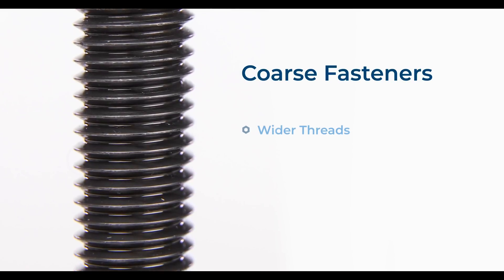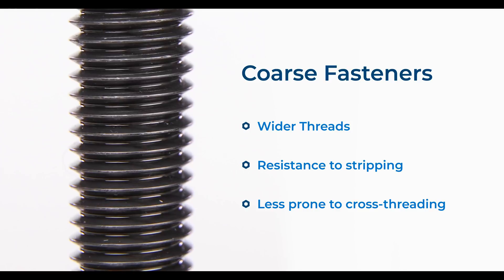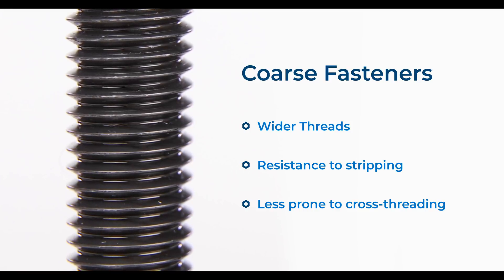For both metric and imperial fasteners, thread pitch generally falls into one of two categories, coarse or fine. With coarse fasteners, the distance between each thread is wider, which makes this type of pitch more resistant to stripping and cross-threading.